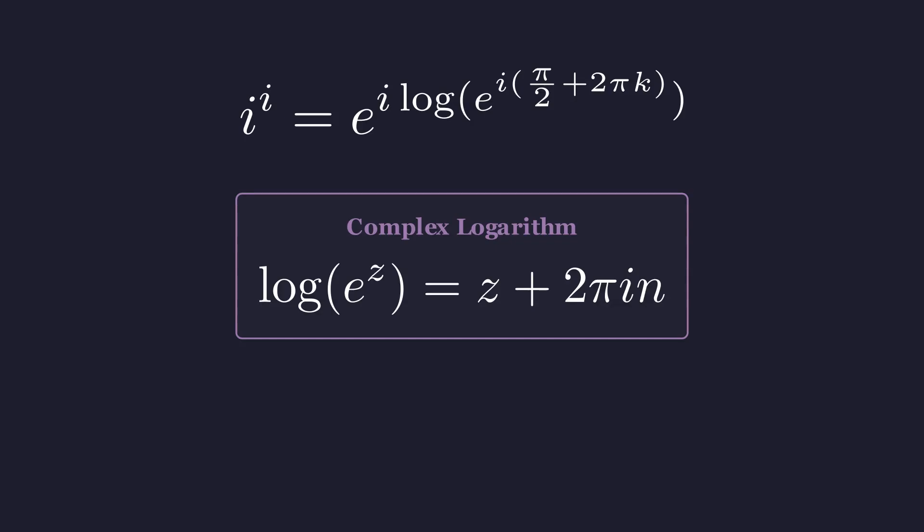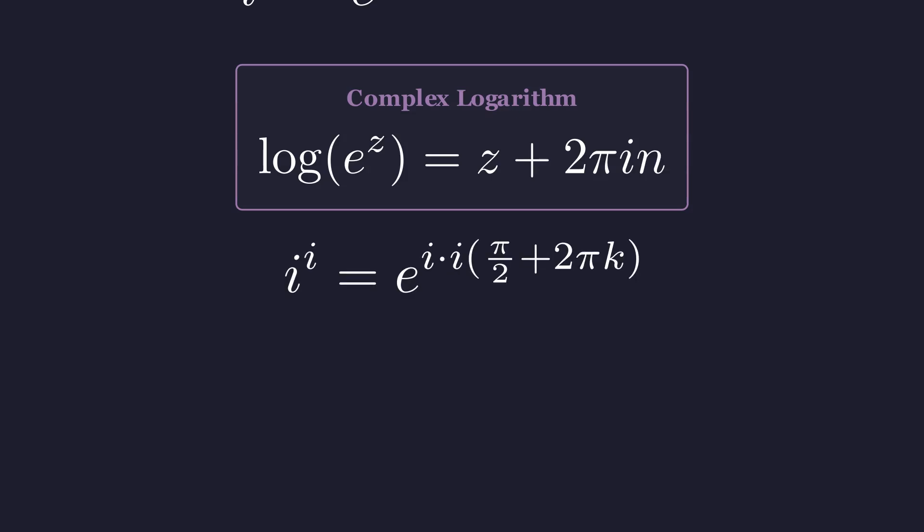So the logarithm and the exponential cancel out, leaving just the exponent. This simplifies beautifully. Now, look what we have in the exponent. We have i times i.